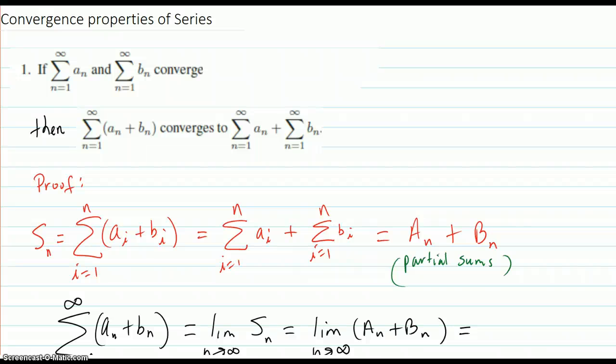Convergence properties of series. The first property is: if you have two series and they both converge, then the sum created by adding the sequence terms from both converges to the series sum of the first sequence plus the series sum for the second. In other words, you can break up the sum.